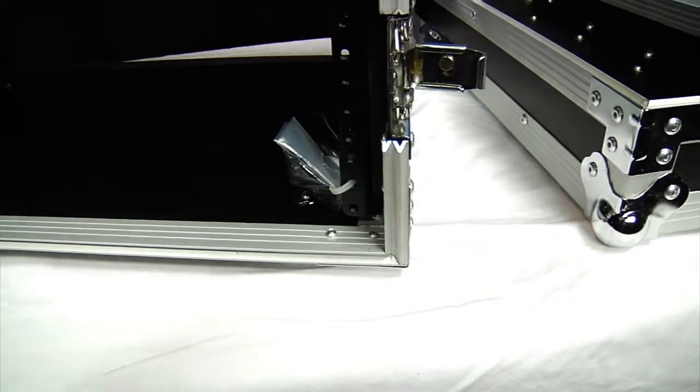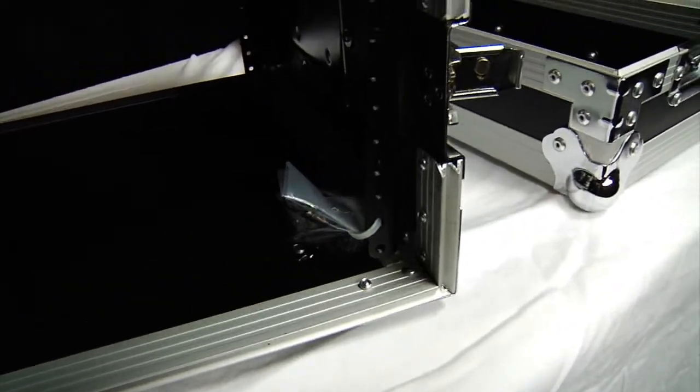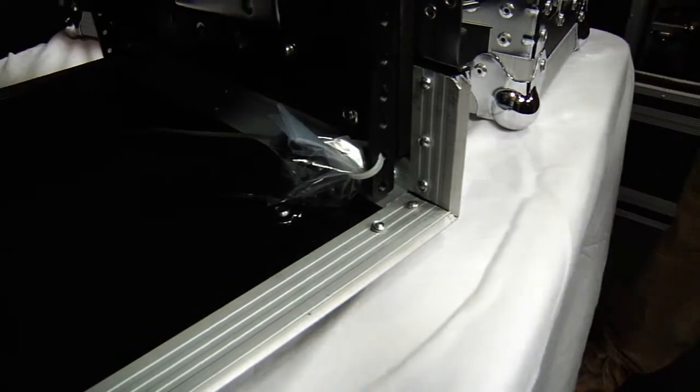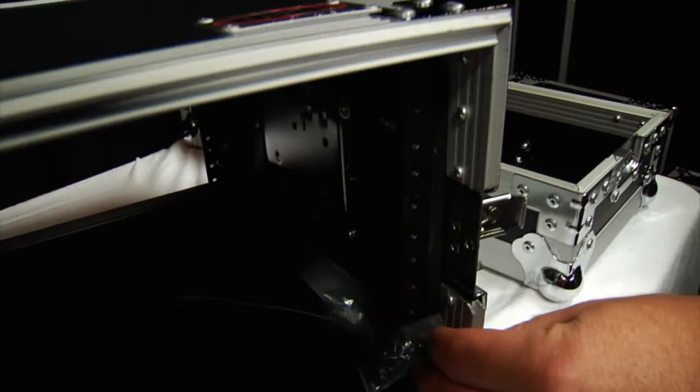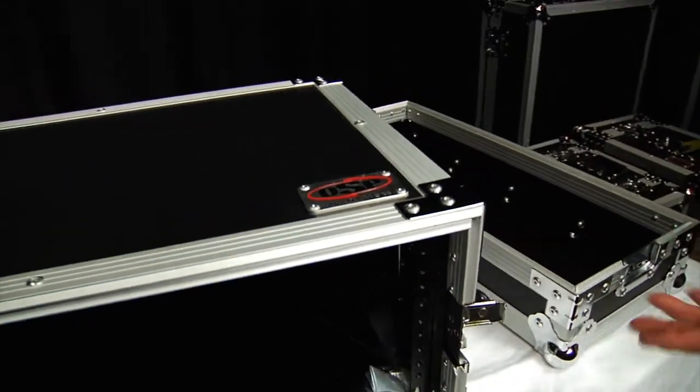It also comes as you see there with a bag of rack screws to help you get started and washers that would protect the surface of your rack mountable gear there. So it's just a handful to get you started. You may need some more depending on how much you're rack mounting in there.